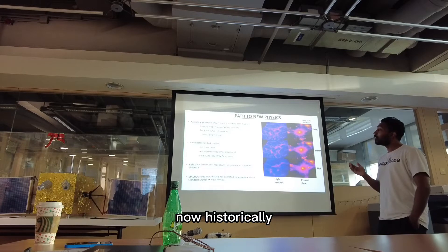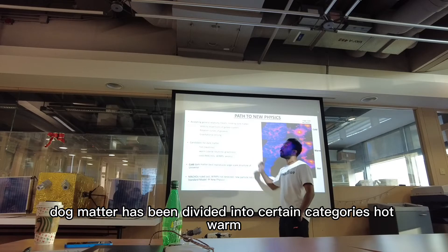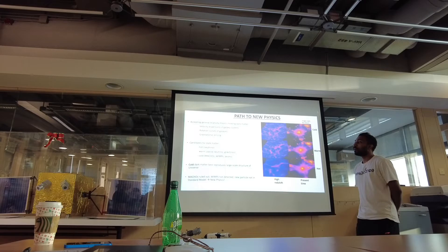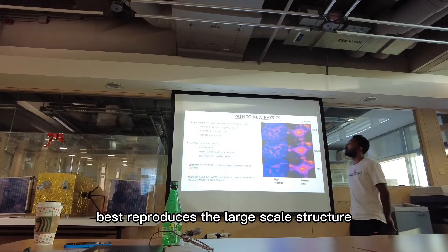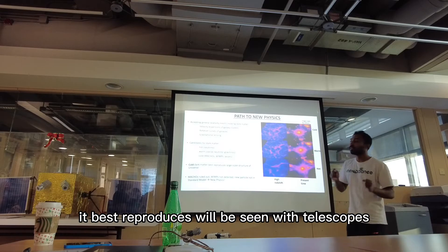Now historically, dark matter has been divided into certain categories: hot, warm, and cold. But we know from simulations that cold dark matter best reproduces the large-scale structure of the universe, like you see here. It best reproduces what we see with telescopes.